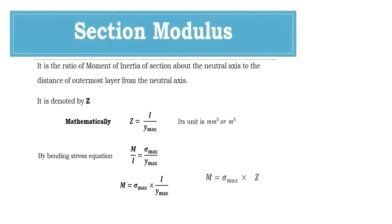We have all learned about section modulus in engineering. The section modulus is basically the ratio of the moment of inertia of any section about its neutral axis to the distance of its outermost layer from the neutral axis. Mathematically, it is defined as Z = I / Y_max, where I is the moment of inertia of the section and Y_max is the distance of the outermost layer from the neutral axis.